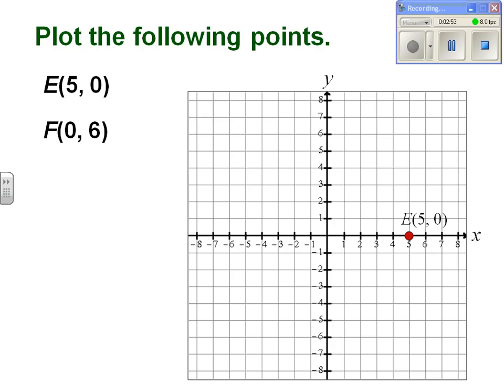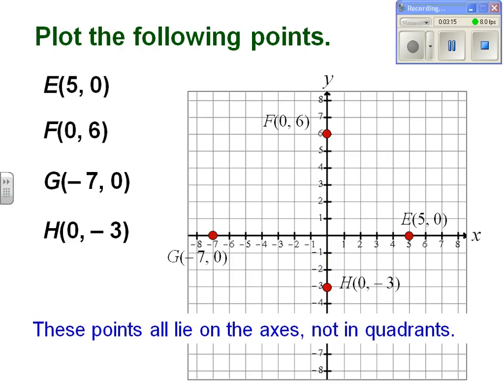F(0, 6) means that I have to move 0 steps along the x-axis and 6 steps along the y-axis. Similarly, G(-7, 0) and H(0, -3). You may have noticed that these points all lie on the axes and not in the quadrants.